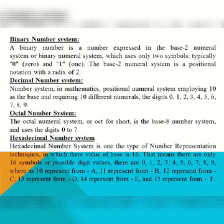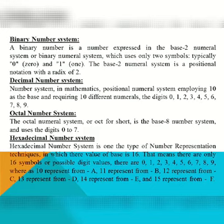The decimal number system has a base of 10 and uses digits from 0 to 9. The octal number system has a base of 8 and uses digits from 0 to 7. The hexadecimal number system has a base of 16 and uses values from 0 to 15.